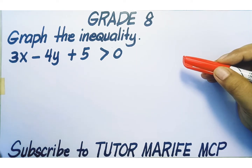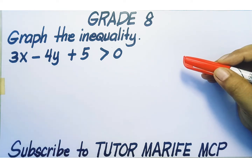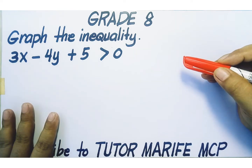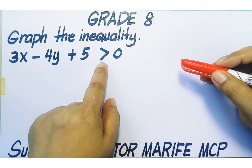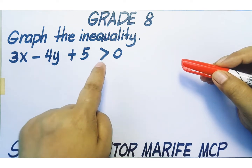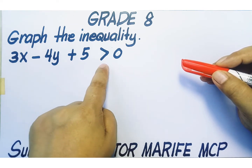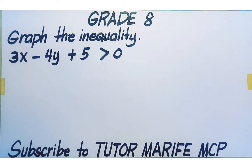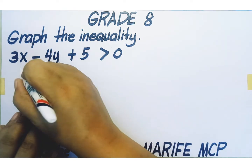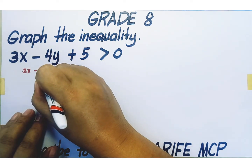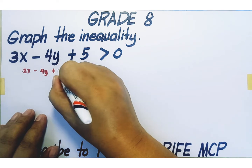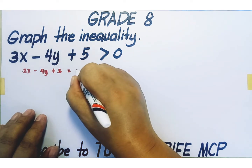Prior to shading the correct half plane, we should first set up the dashed line that defines the boundary of the half plane. Replace the inequality symbol with an equal sign to obtain the equation of the boundary line. So from 3x minus 4y plus 5 greater than 0, the equation of the boundary line is 3x minus 4y plus 5 equals 0.